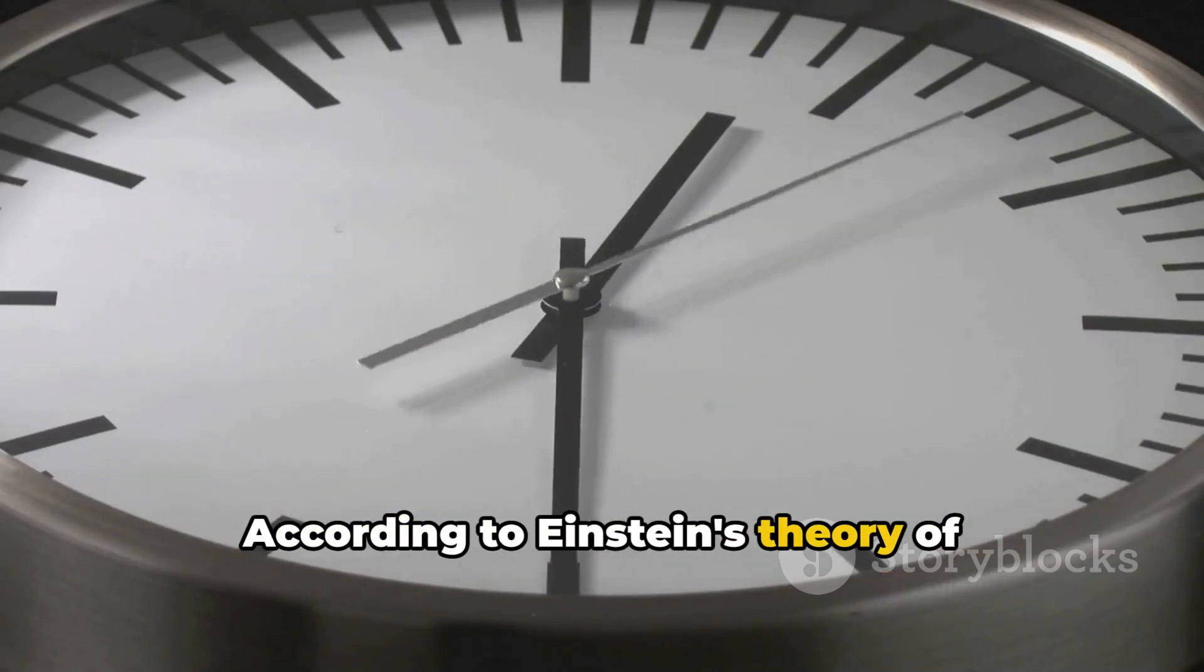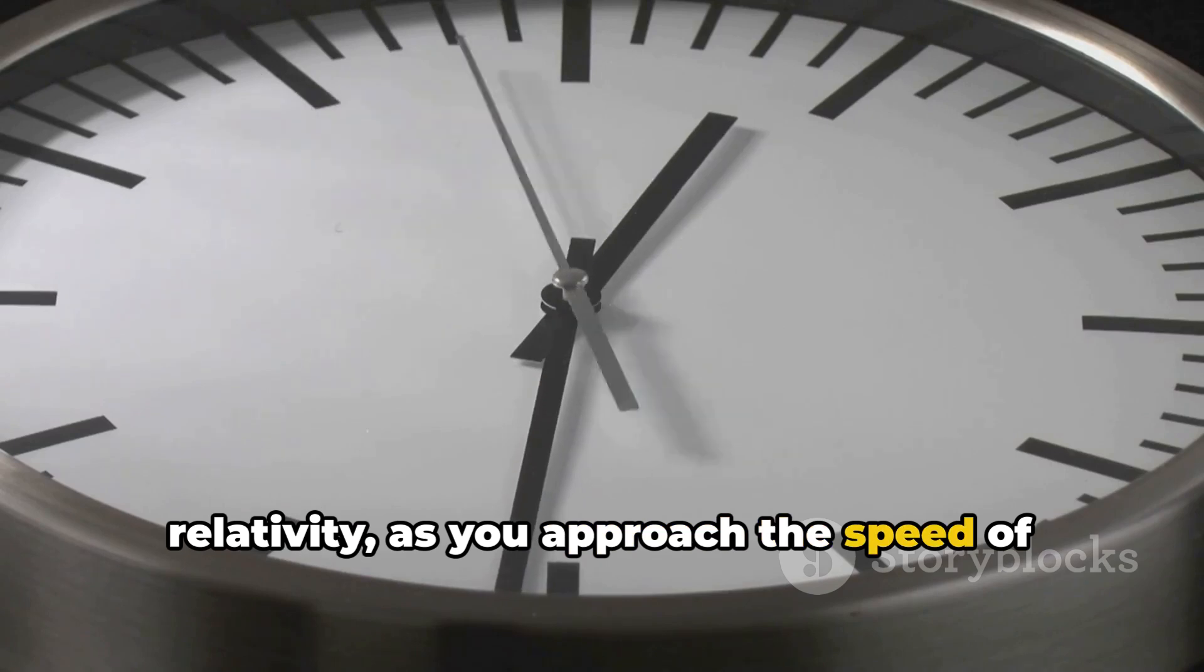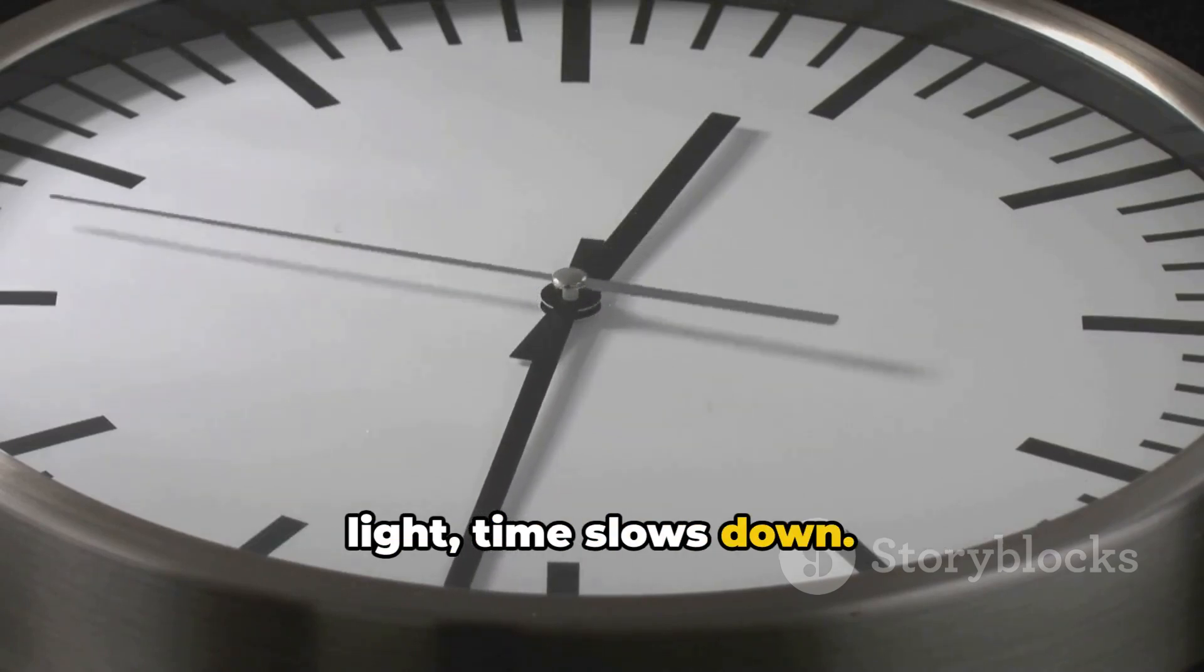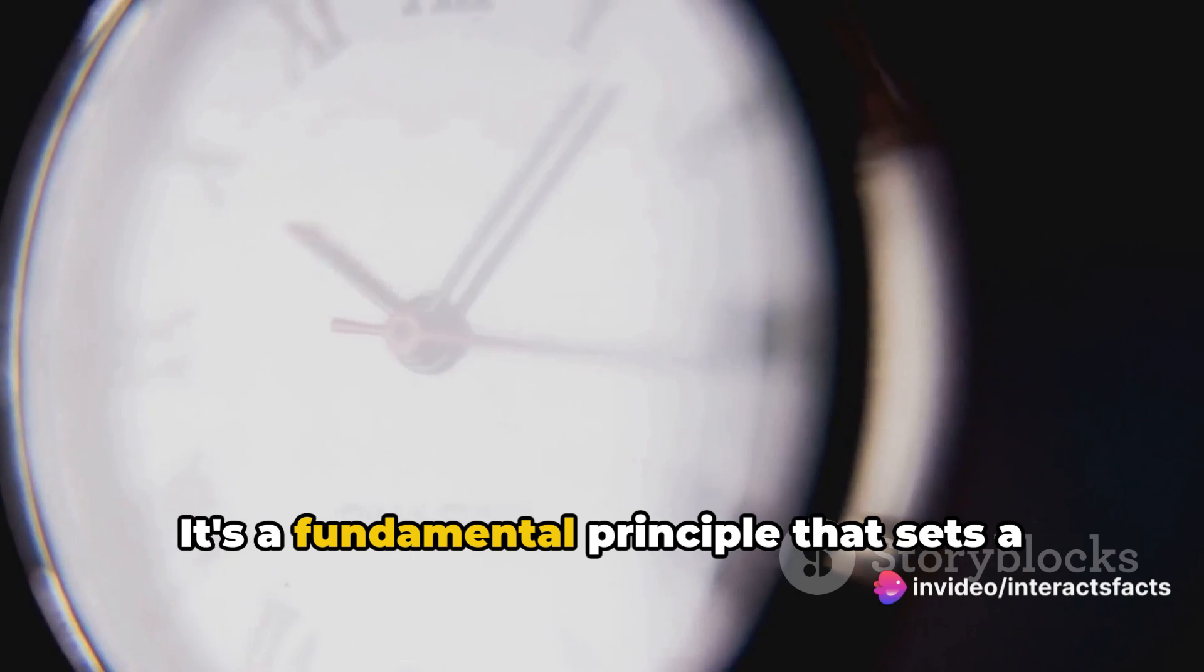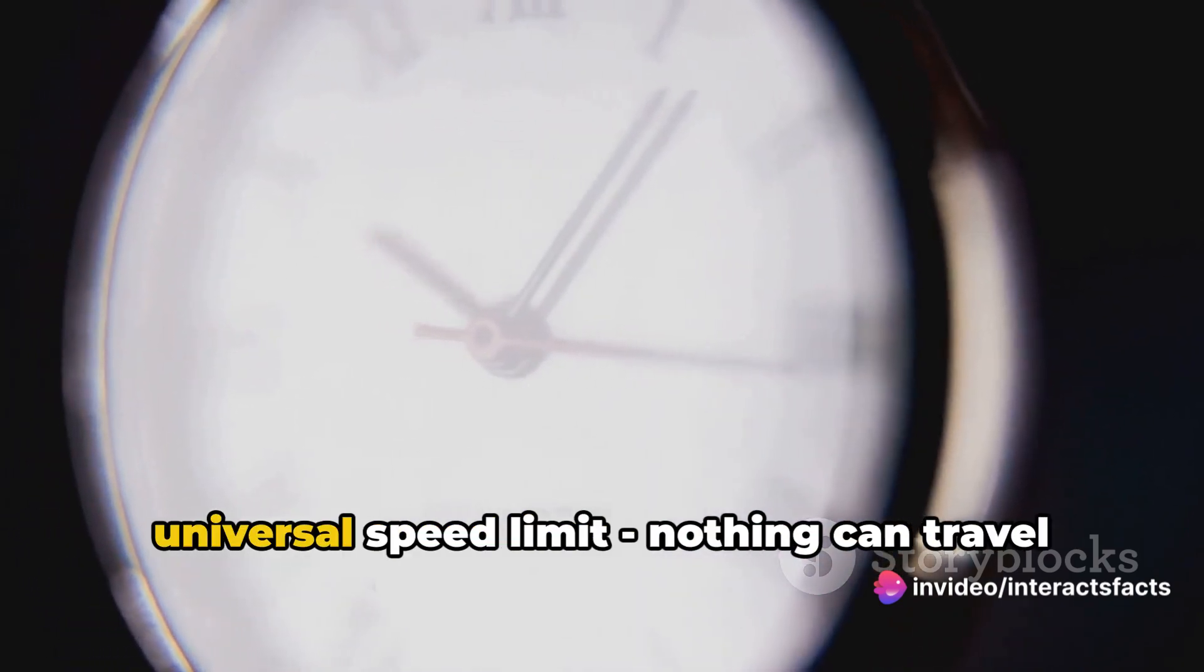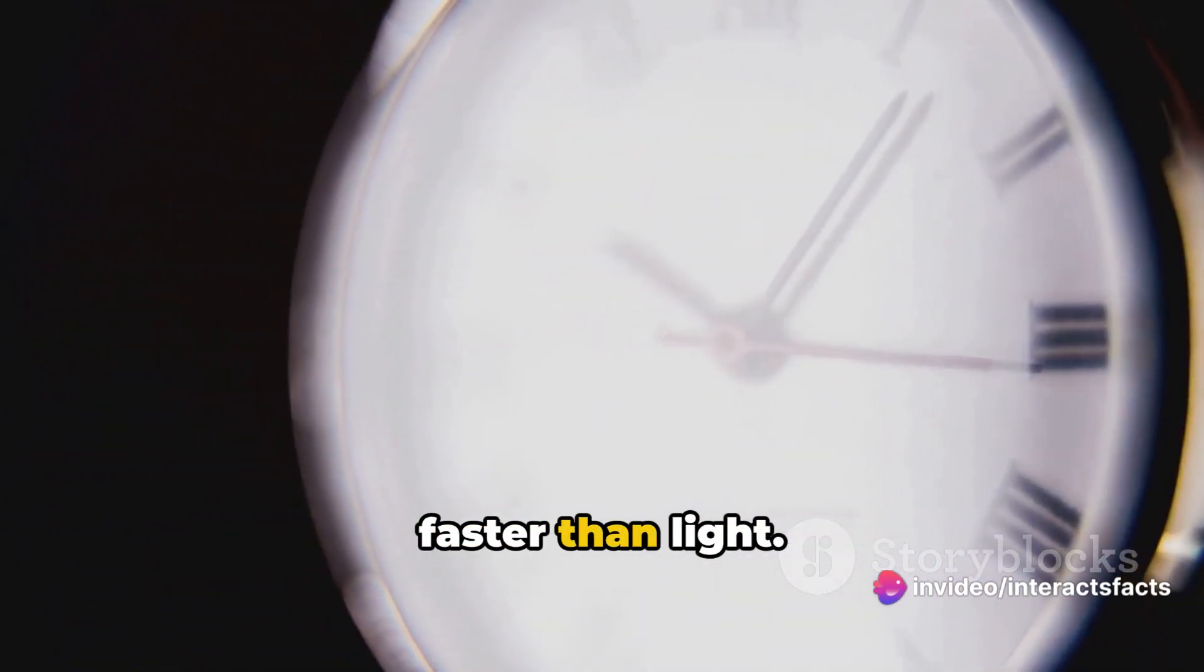According to Einstein's theory of relativity, as you approach the speed of light, time slows down. This is known as time dilation. It's a fundamental principle that sets a universal speed limit. Nothing can travel faster than light.